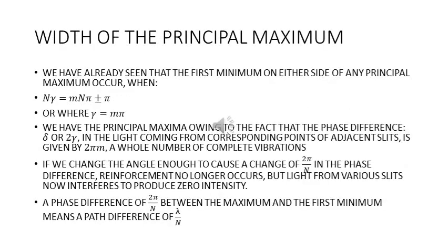We now discuss the formation of the principal maximum and in particular what is the width of the principal maximum. We have already seen that the first minimum on either side of any principal maximum occurs whenever we have the condition nγ equal to mnπ ± π — that is, wherever γ equals mπ — we have the principal maximum.